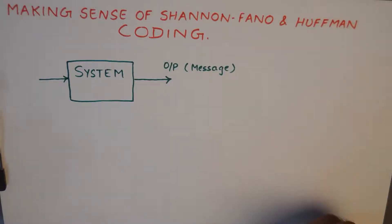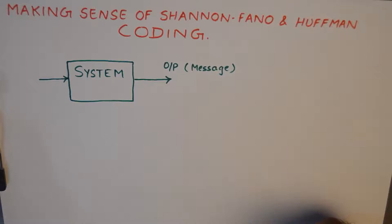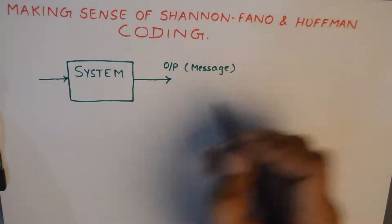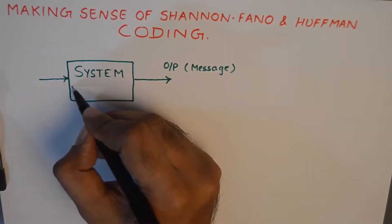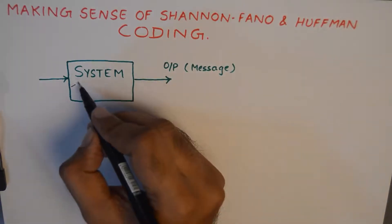Now I'll talk about a system here. That system is generating some messages. Please understand these messages will not be equal in length, and that is what makes this system a complicated system. The first thing I'll attribute to this system is that it is complicated.